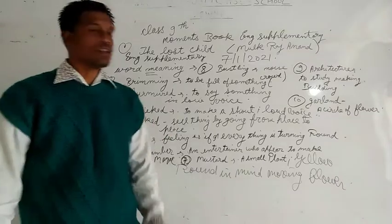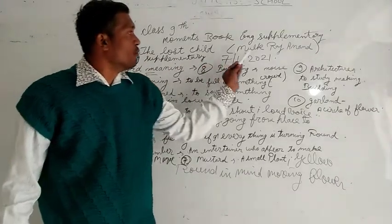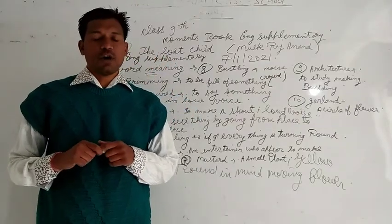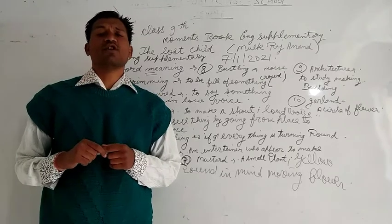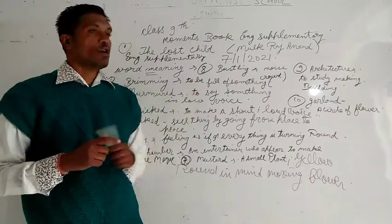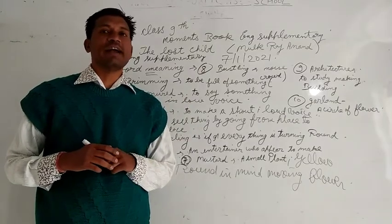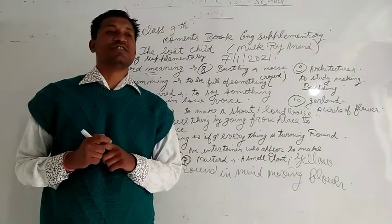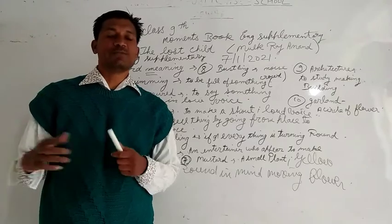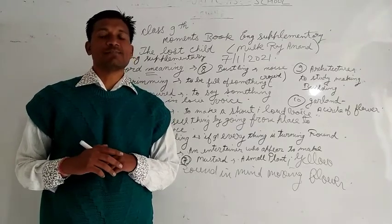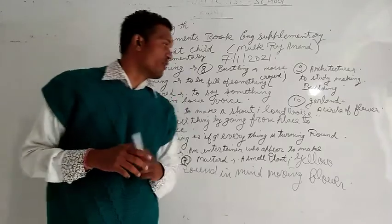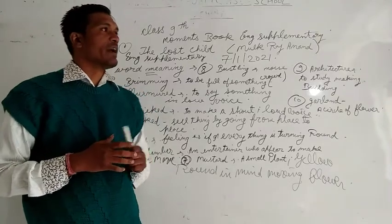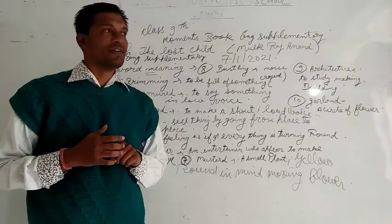Now in this story, 'The Lost Child' written by Mulkraj Anand, he has described a scenario, a picture of our market — it is a thing called a fair. Father, mother and child go to the fair, and he has described that the child is very much naughty. He is always asking his mother, 'Please buy this, please buy this.' But the mother and father have some financial problems, so they try to divert the mind of the small child. In this way, the child gets lost. So we conclude that it is a very beautiful story of a fair.